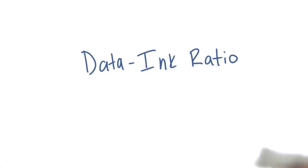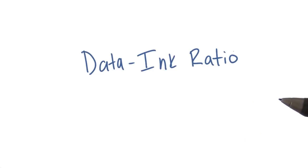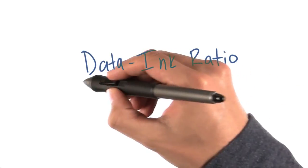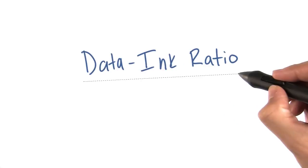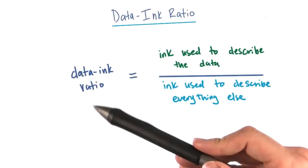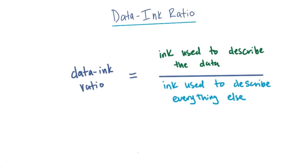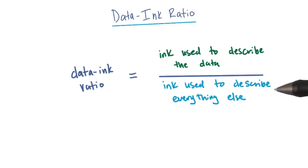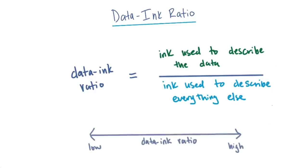In the previous example, we saw how we can make visualizations more clear by removing extraneous elements. We can conceptualize this relationship using something called the data-to-ink ratio. The data-to-ink ratio was defined in 1983 by Edward Tufte and describes the ratio of ink used to describe the data to the ink used to describe everything else.